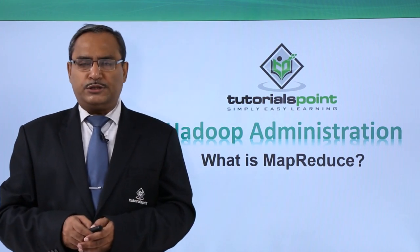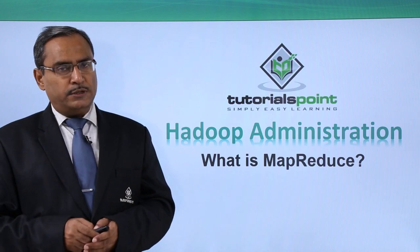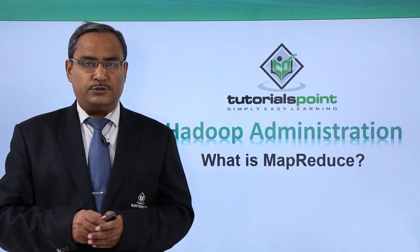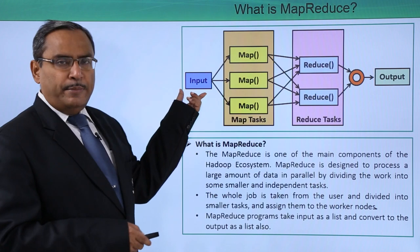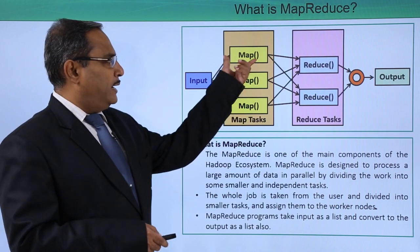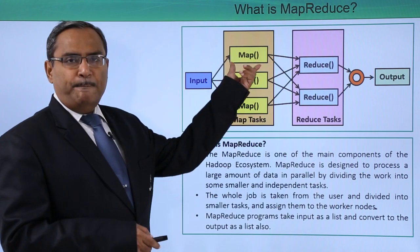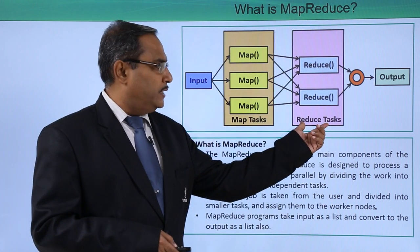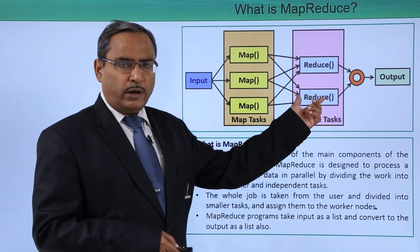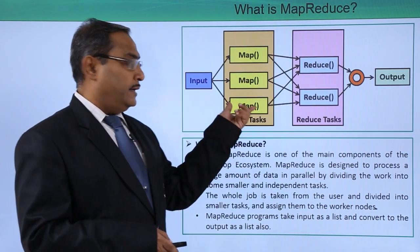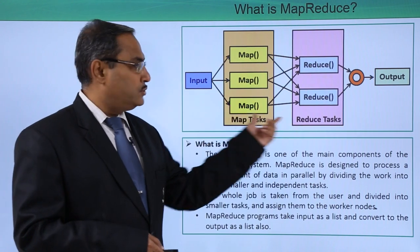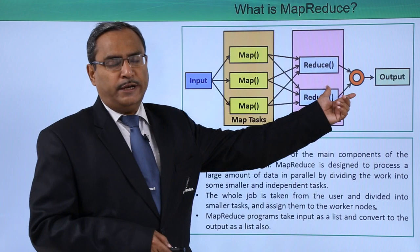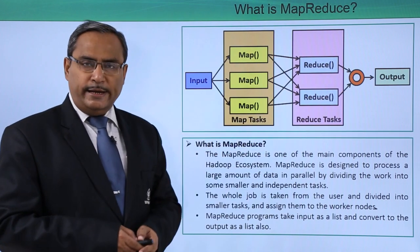Let us go for further discussions with some diagrams and examples. Here we have the input, the map tasks, and then the reduce tasks where the reduce method will be working. The map methods work first, then the reduce methods, and the final output will be obtained in the aggregated form.